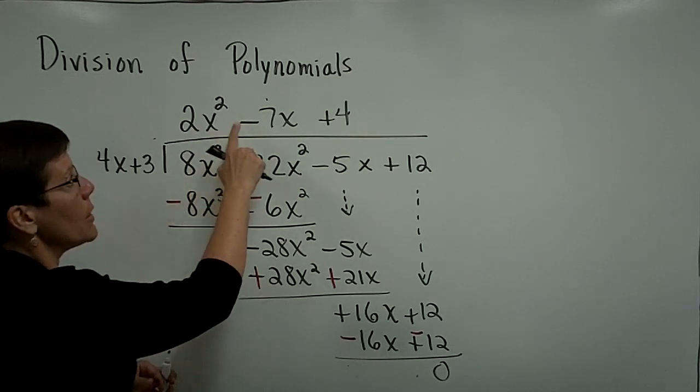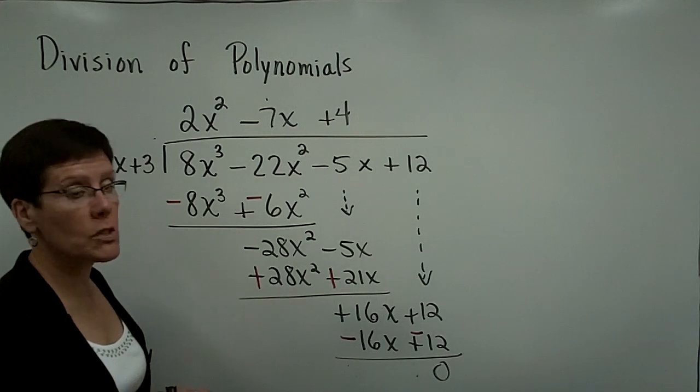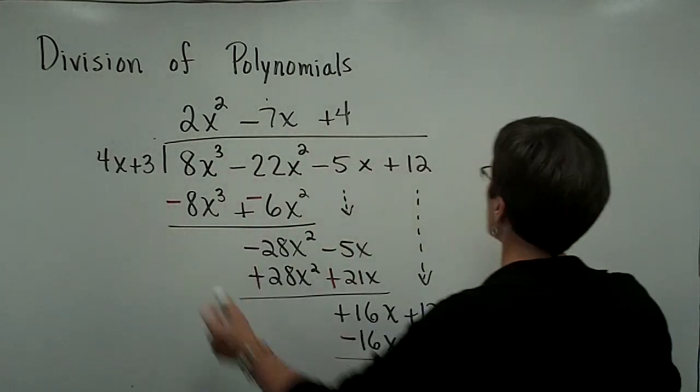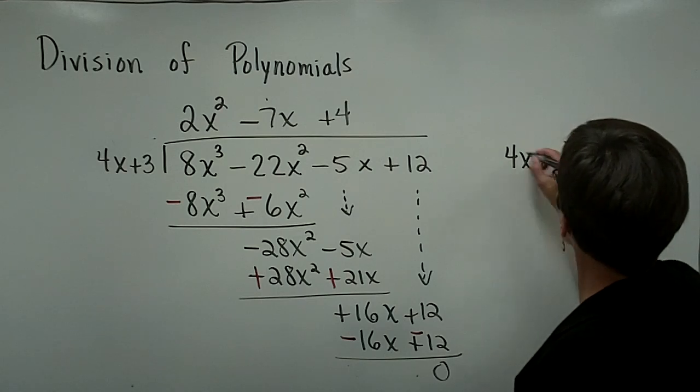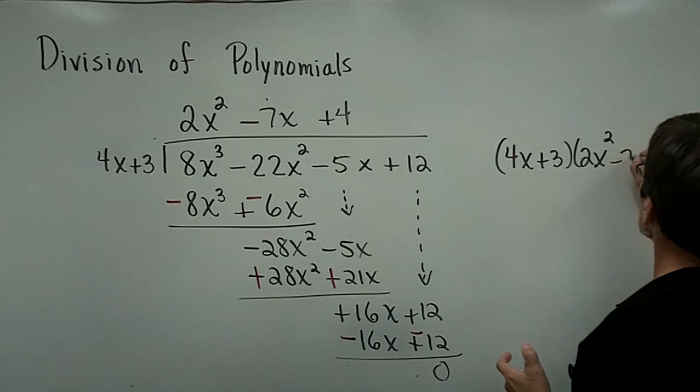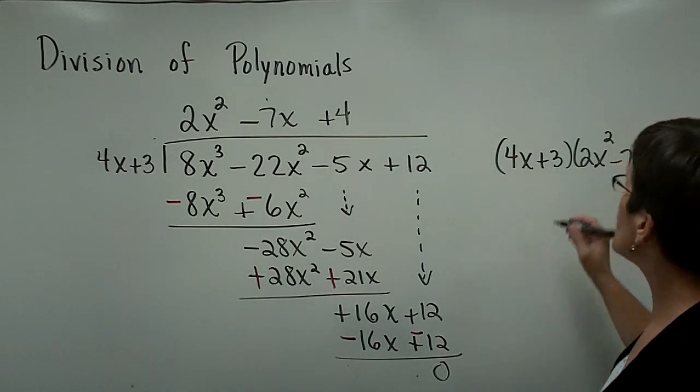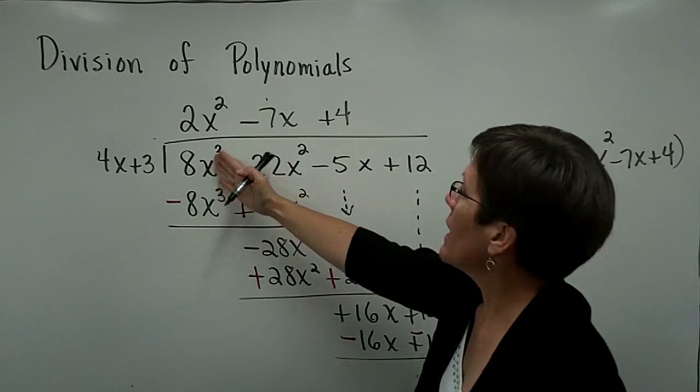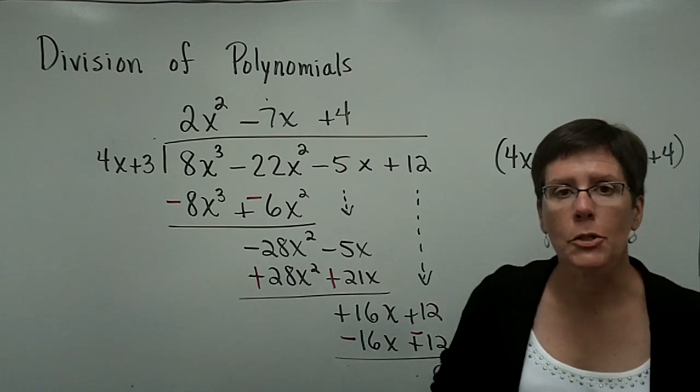My solution to this problem is 2x squared minus 7x plus 4. If I took that answer and multiplied it by the divisor over here, if I took the 4x plus 3 times the 2x squared minus the 7x plus the 4, and distributed that, I would get the 8x cubed minus the 22x squared minus the 5x plus the 12. I'm going to leave that check to you.